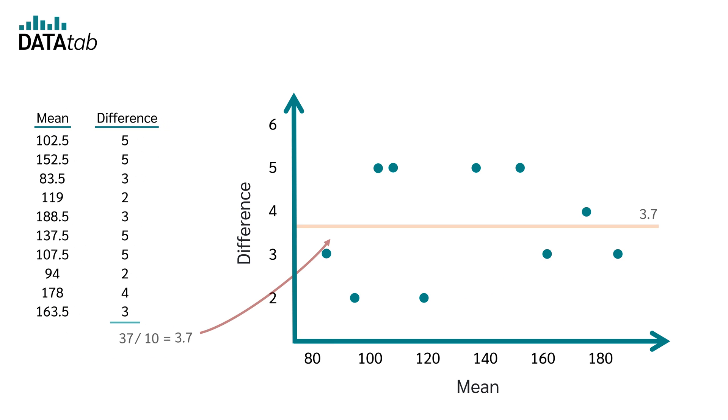Now we can calculate the mean of the differences and plot it on a Bland-Altman plot. We simply add up all the differences and divide by 10. This results in 3.7. That is what we call the bias.